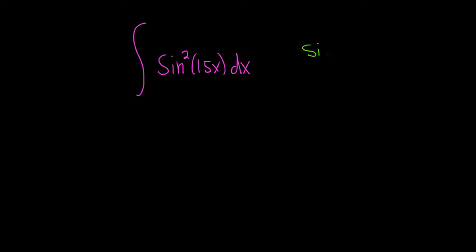So the one we'll use in this problem is sine squared x equals 1 minus cosine 2x over 2.